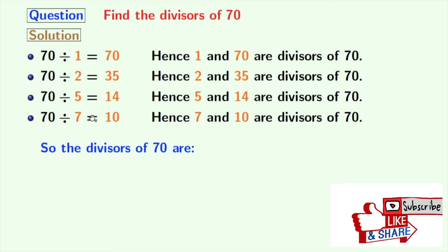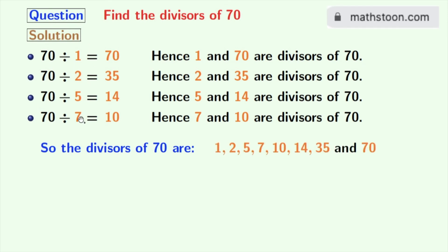These are 1, 2, 5, 7, 10, 14, 35, and 70. So the total number of divisors of 70 is 8.